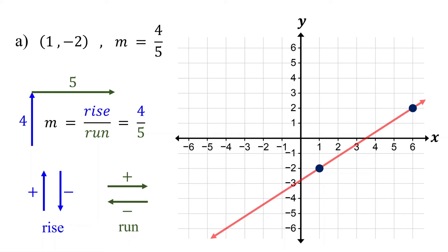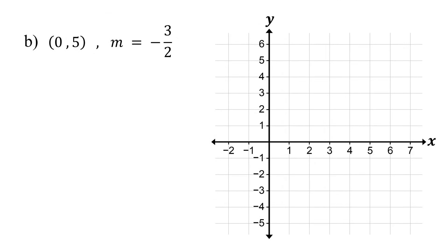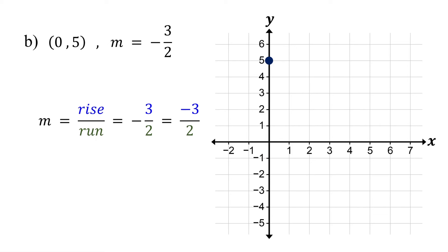Now, let's look at what happens when the slope is negative. First, plot the point 0, 5. If you need a refresher on plotting points, check the link in the description. Next, find another point using the slope. Remember, slope is rise over run, and in this case, it is negative 3 over 2. Place the negative sign in the numerator. This doesn't change the value of the slope, since they are equivalent fractions.